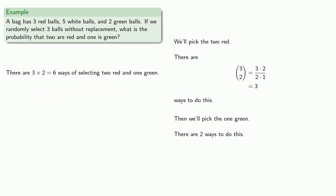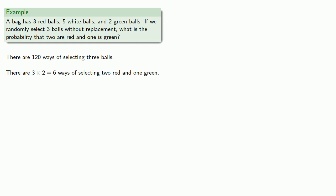And previously we determined there's 120 ways of selecting 3 balls. And again, making clear our assumption, assuming the sets of balls are equally likely, the probability of selecting 2 red and 1 green will be 6 out of 120, or 0.05, or about 1 in 20.